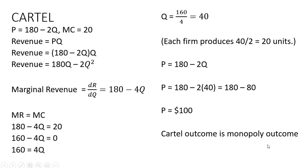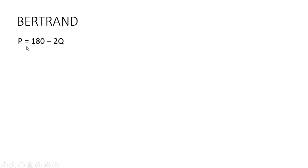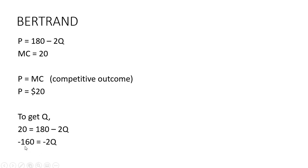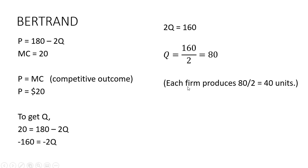The cartel outcome is the monopoly outcome. Moving on to Bertrand: the inverse market demand is 180 - 2Q and marginal cost is $20. Under Bertrand we get the competitive outcome — price equals marginal cost — so the market price is $20. To get quantity, we plug $20 into the inverse market demand and solve for Q: subtracting 180 from both sides, the negatives cancel, then dividing through by 2 gives us Q = 80 units. Each firm produces half, so 40 units each.